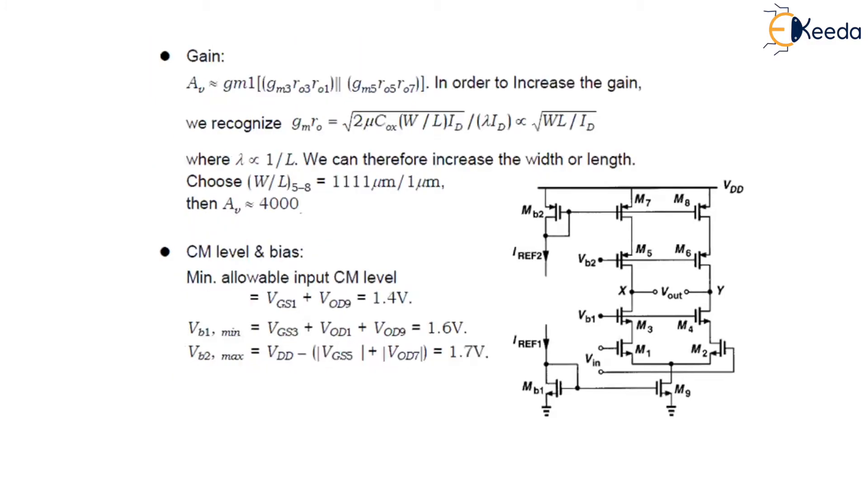Whereas W by L for transistor 9 is coming up to be 1250. Now, the next parameter is gain. Where gain is given as gm1 in bracket gm3 ro3 ro1 bracket goes in parallel with gm5 ro5 ro7.